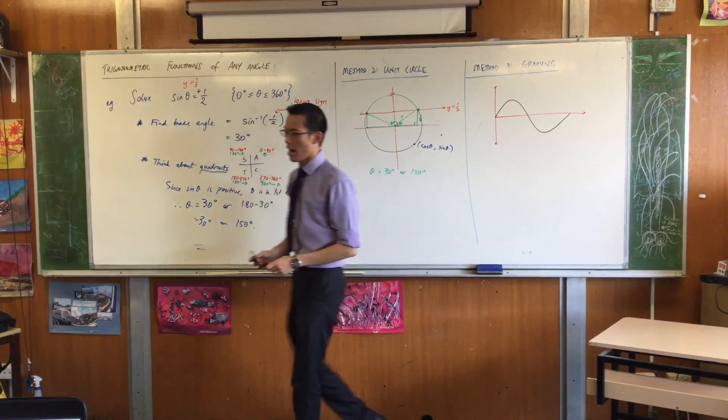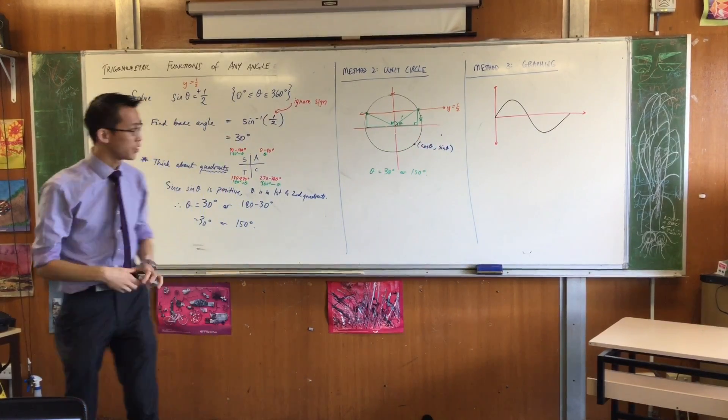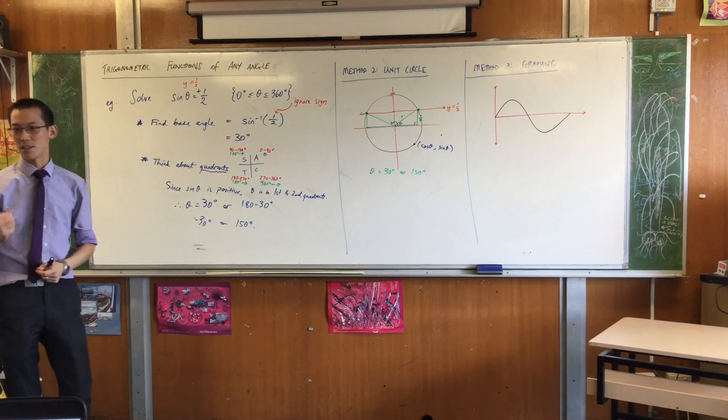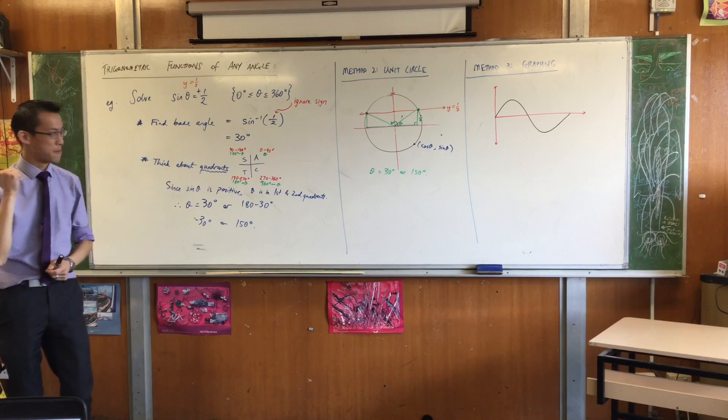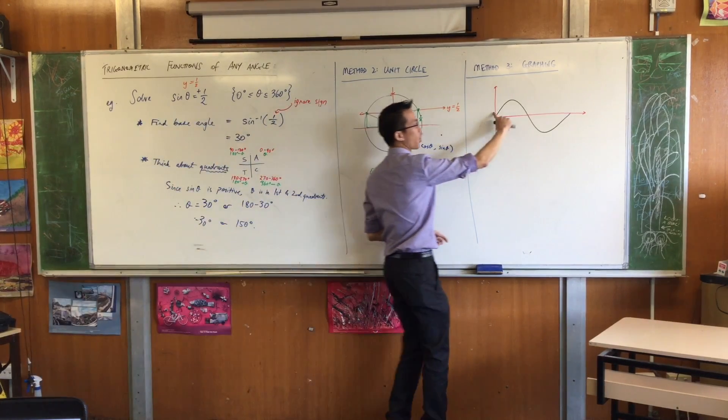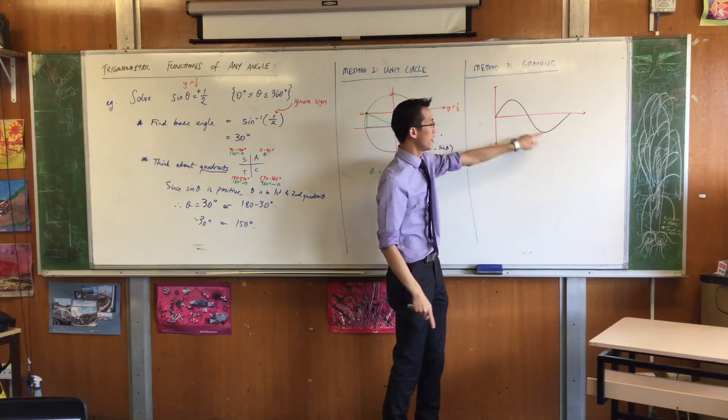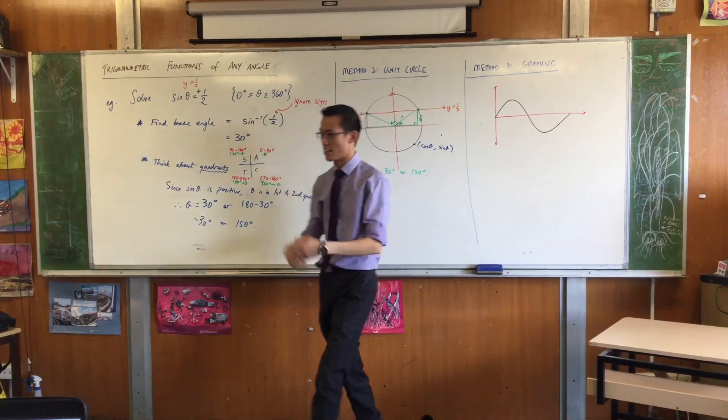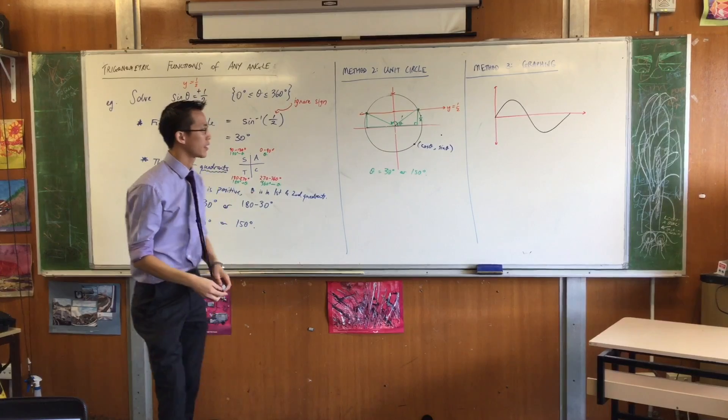A couple of things to point out while we're just looking at this graph. Number one, it is smooth. Number two, it has these spots where it sort of curves around gently. Do you notice that? Those are not sharp points. They are gentle curves, just like a parabola.